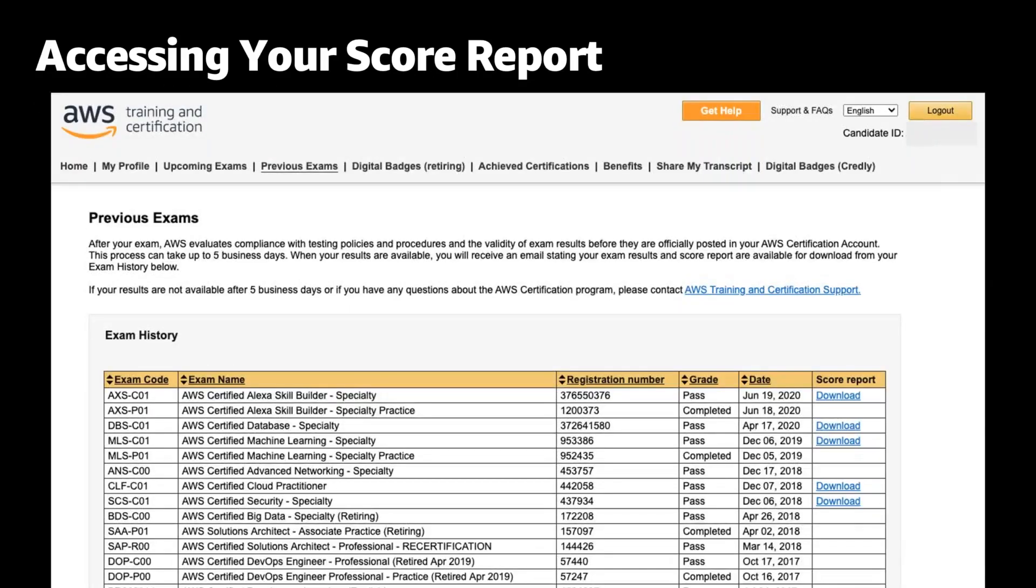Once on the CertMetrics site, you want to navigate to the Previous Exams tab. On the right-hand side, you can use the links to download a report.